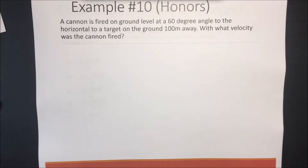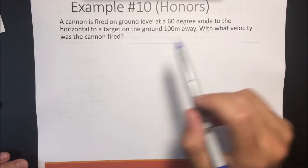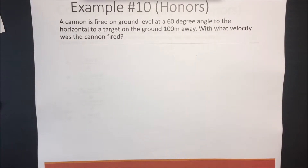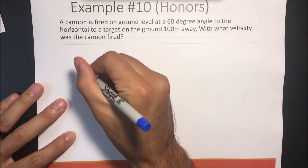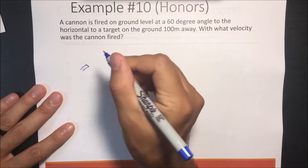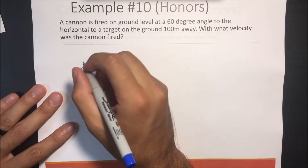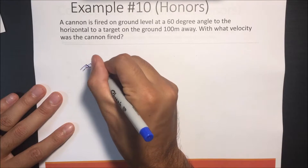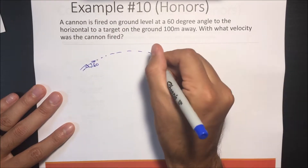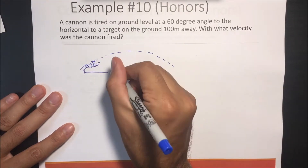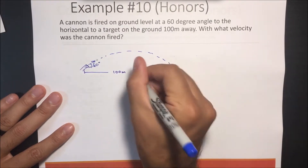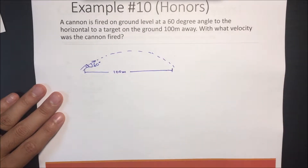This next question is pretty difficult — Example number 10. A cannon is fired on the ground level at a 60-degree angle to the horizontal, to a target on the ground 100 meters away. With what velocity was the cannon fired? So we have a cannon that shoots something at an angle of 60 degrees and it hits 100 meters away, and that's all we know.